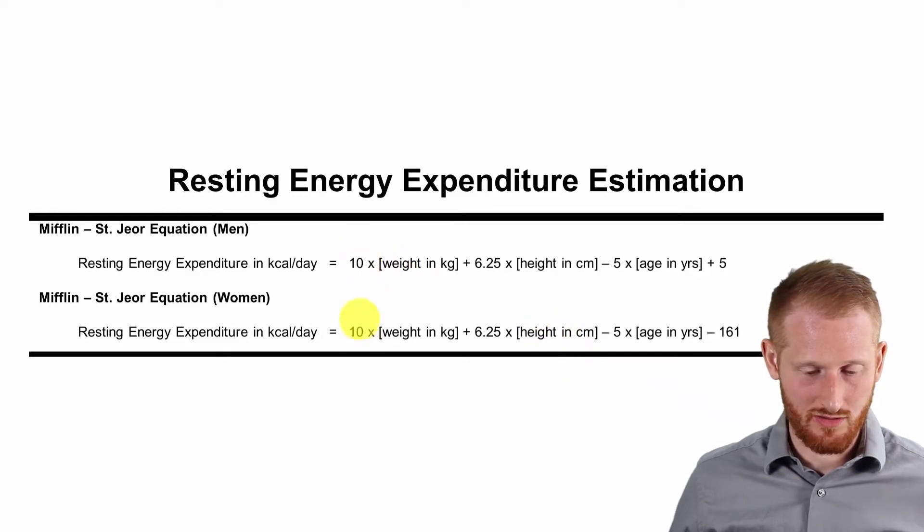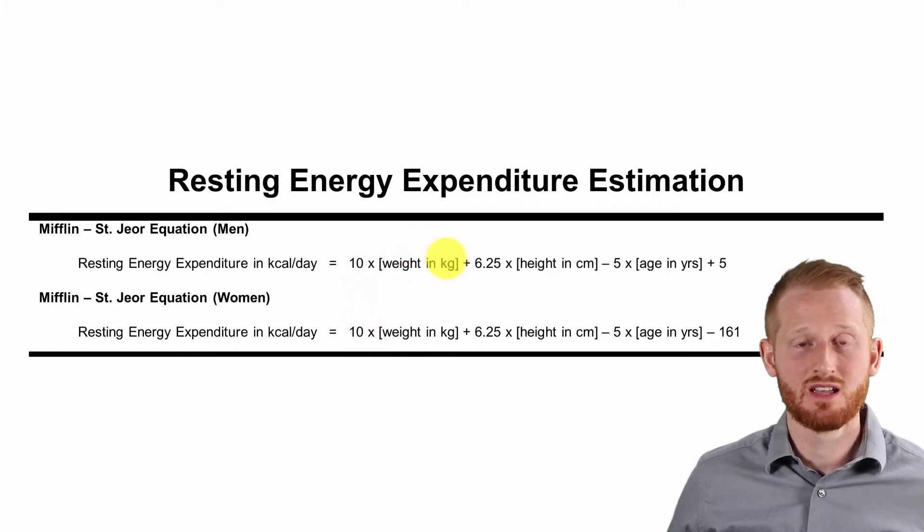Each one starts with our weight factor. So here's the men's on top and women's on bottom. Each one's going to start with our weight factor here. So it's 10 times the body mass of the individual.